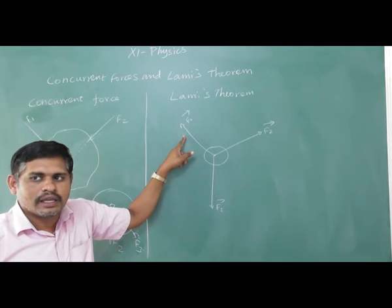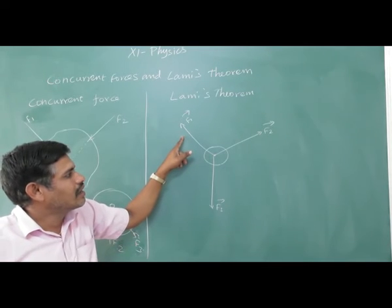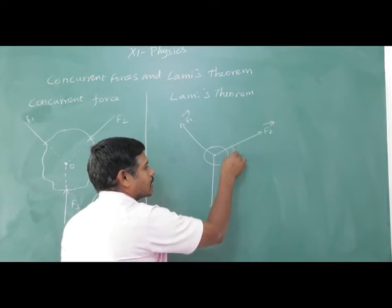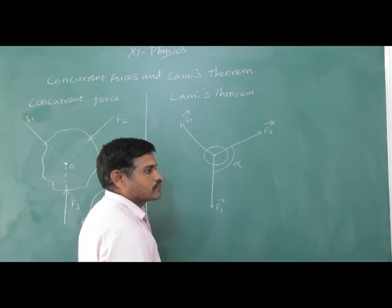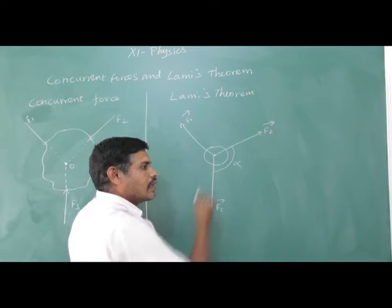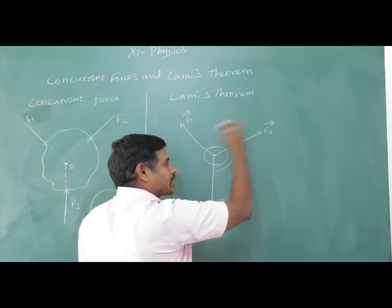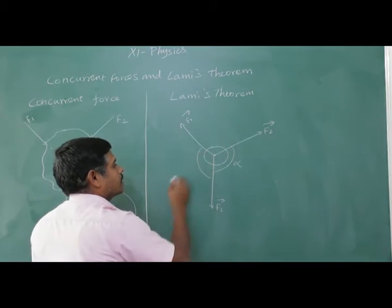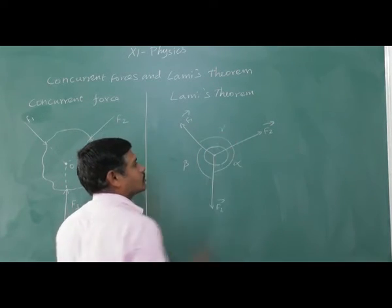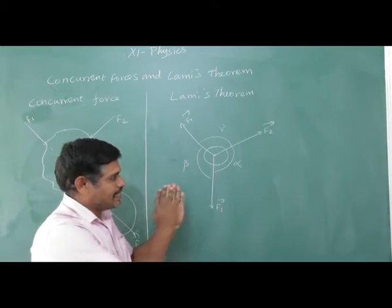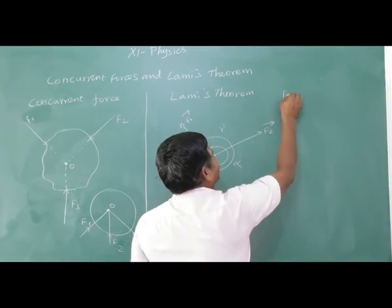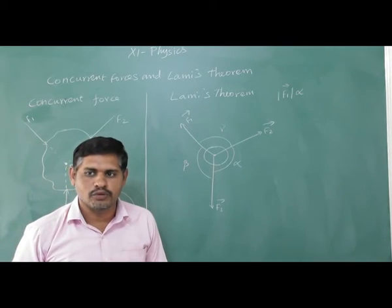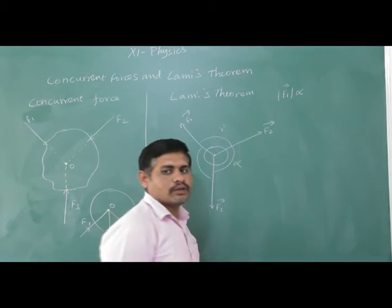F1 is a force acting at an angle. There is another force at another angle. The magnitude of F2 is directly proportional to the sine of the angle between the other two forces. The other angles are called beta and gamma. The magnitude of each force is directly proportional to the sine of the angle between the other two forces.